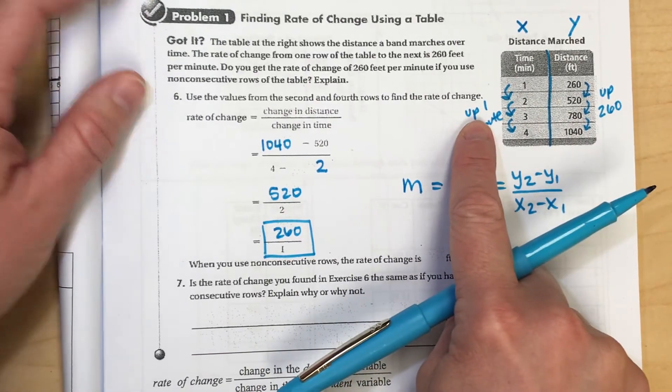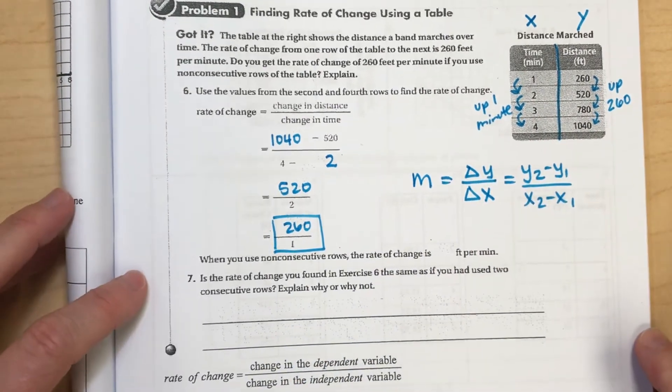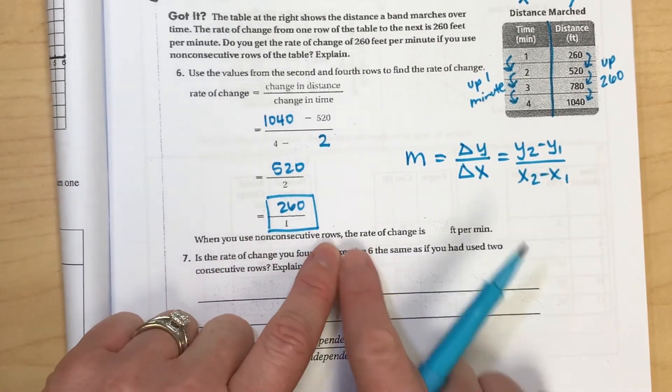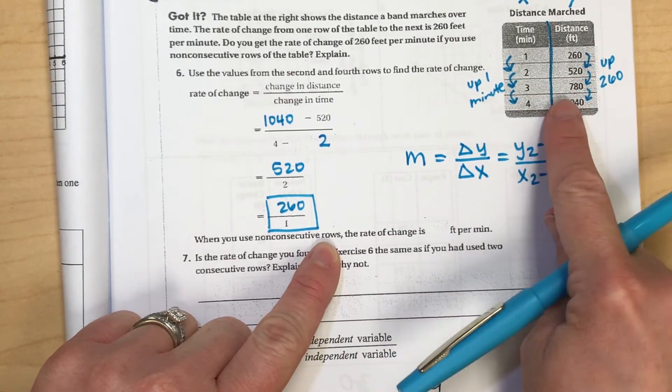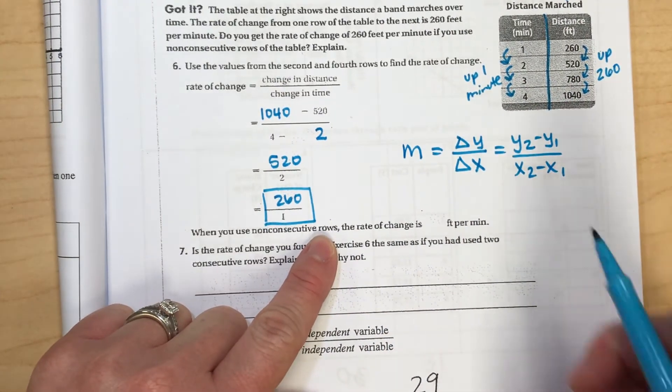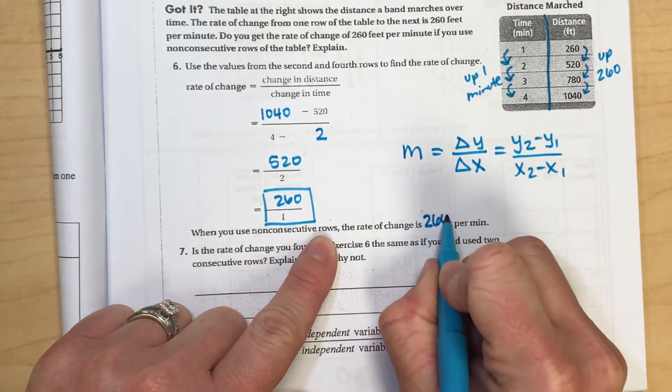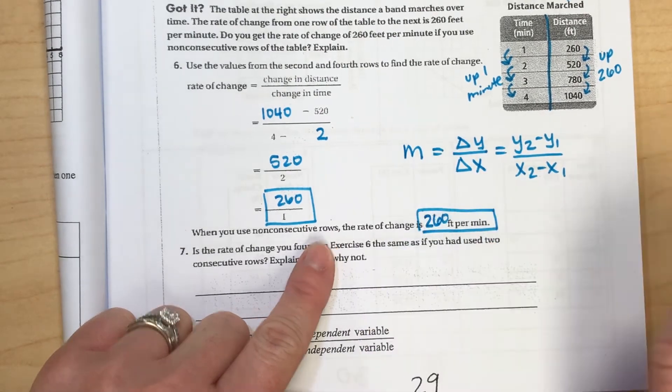260 over one is just 260. So when you use non-consecutive rows, you really are going to have to use the formula. But if you use two consecutive points that are right together, it may just be a little bit quicker. But the change is 260 feet per one minute.